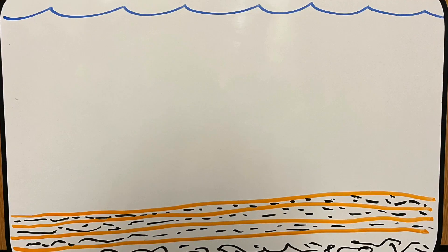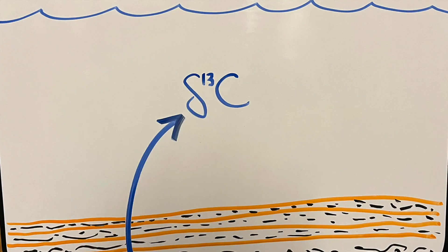These carbonate rocks preserve the delta C13 values, and so they are amazing archives of primary productivity and shifts in the carbon cycle. But productivity isn't the only factor that influences delta C13 values in marine carbonate rocks.